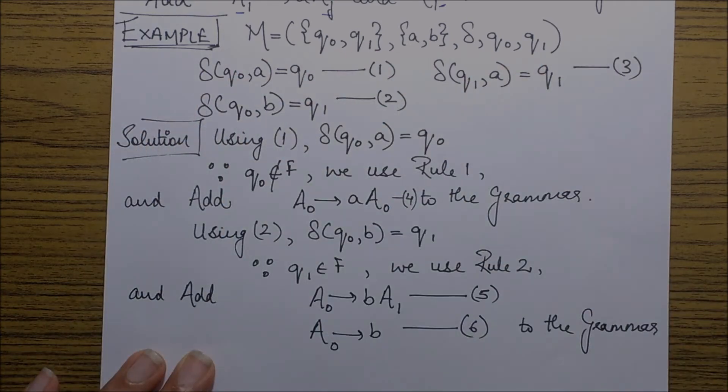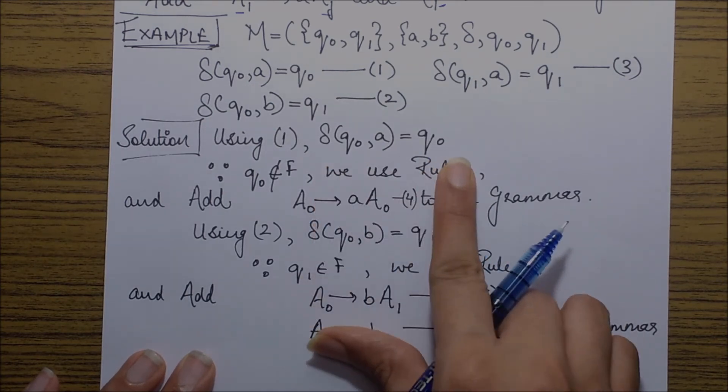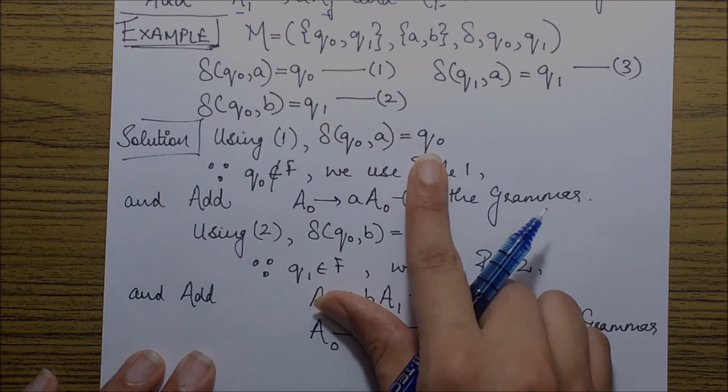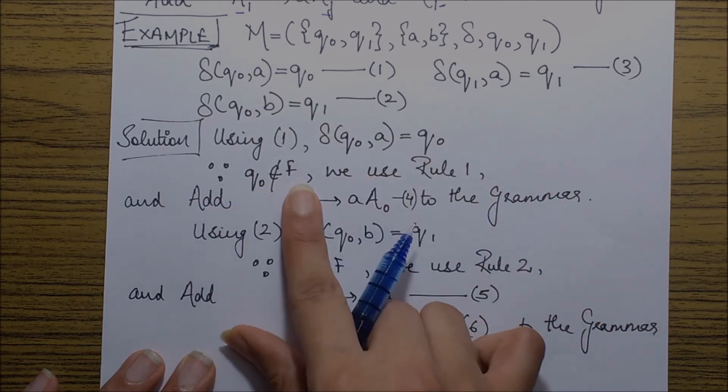Terminal symbols or the input symbols are a and b, and the transition function has been defined with the help of these three transitions.